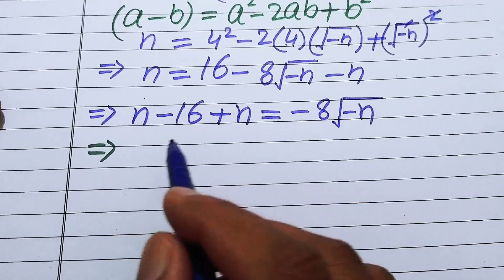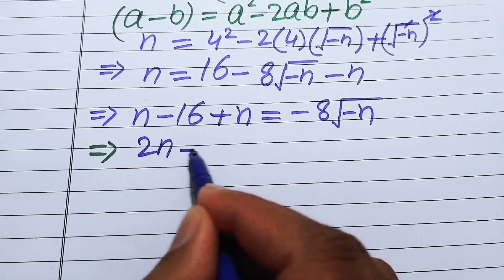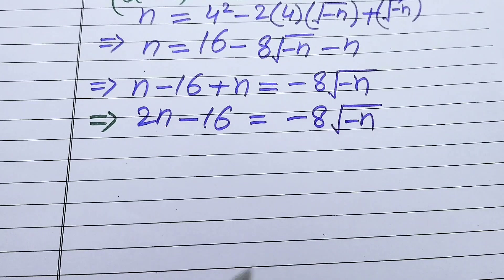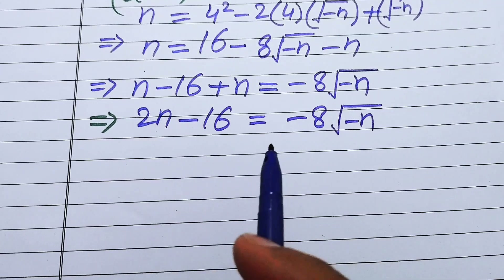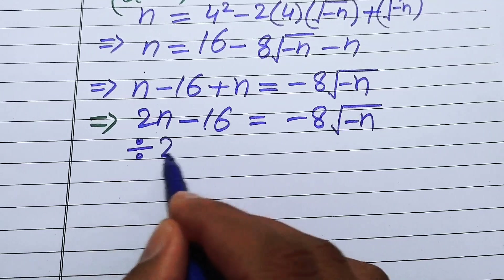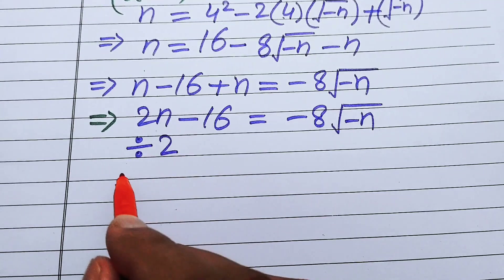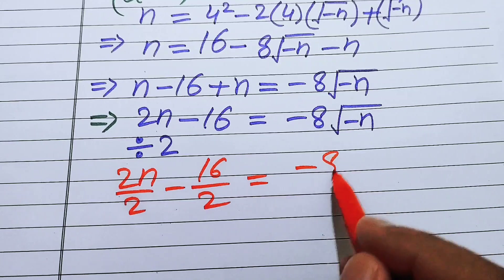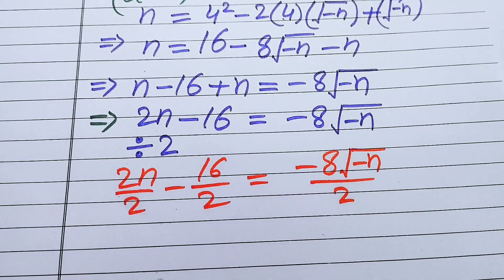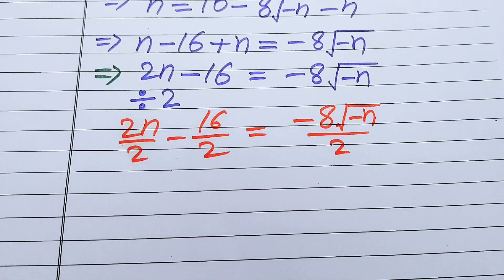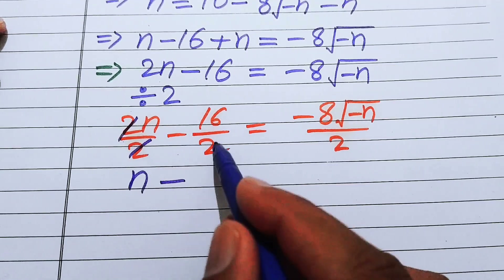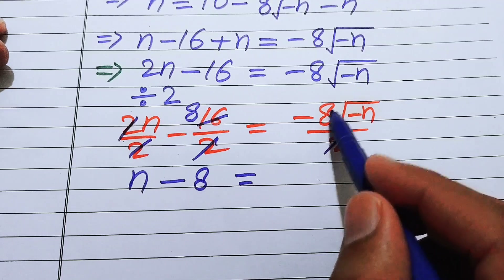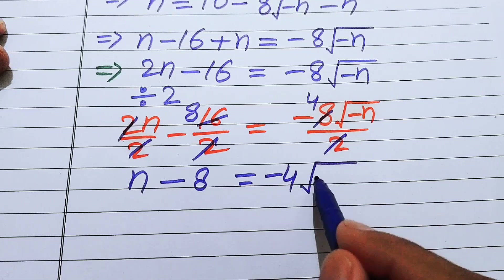After adding like terms we get 2n minus 16 equals minus 8√(−n). We then divide both sides by 2: 2n/2 minus 16/2 equals −8√(−n)/2, which gives us n minus 8 equals minus 4 times √(−n).